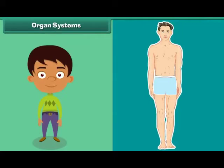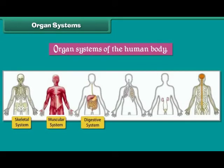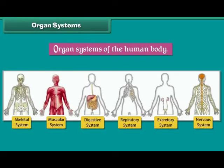Organ systems. The internal organs of the human body are grouped together to form different organ systems. Each organ system performs a special function. Some important organ systems of the human body are the skeletal system, muscular system, digestive system, respiratory system, excretory system and nervous system. Let us now learn how each organ system works.